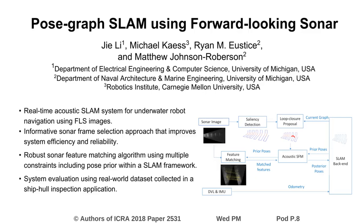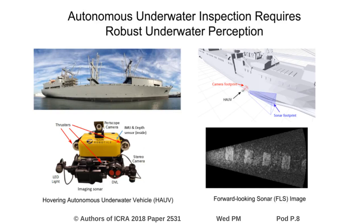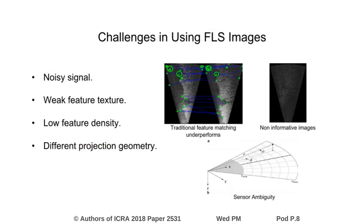Post graph SLAM using forward-looking sonar. Underwater perception is very important for underwater navigation systems to correct unbounded drifting. Forward-looking sonar, a two-dimensional acoustic sensor, is one of the promising perception modalities as it offers a large field of view and stable signals against turbid water environments. However, utilization of this modality suffers from unique challenges including high SNR, low image texture, and sensor ambiguity.